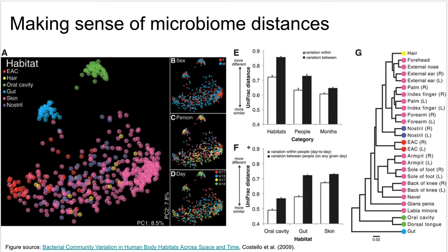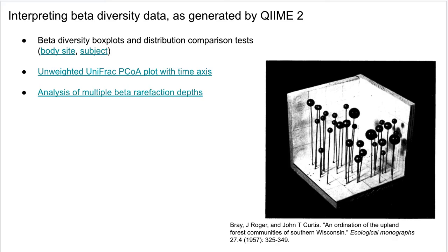A colleague shared this historical example — an ordination diagram created in the 1950s, apparently made out of plywood. We've come a long way since then. Now let's look at these visualizations in more detail using QIIME 2, starting with some interactive visualizations of beta diversity data.